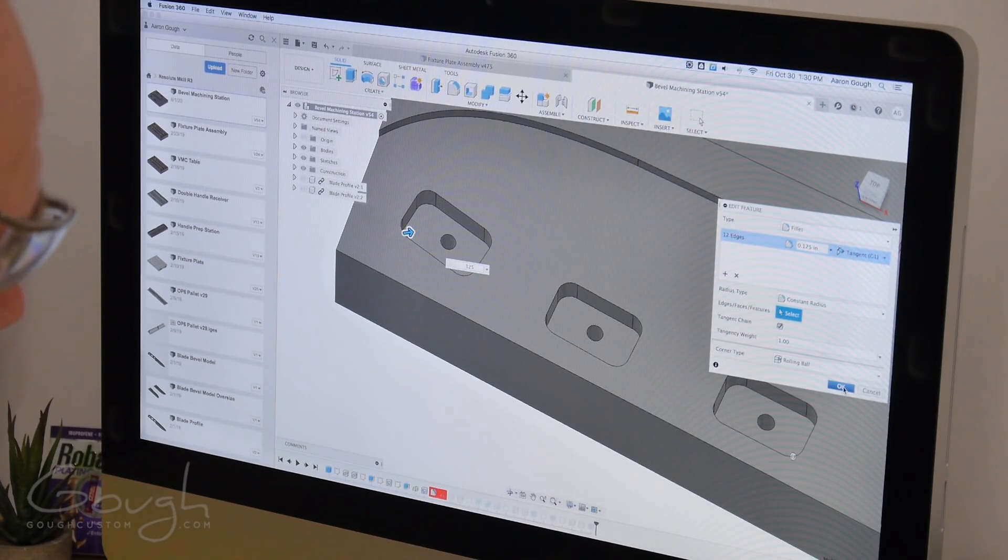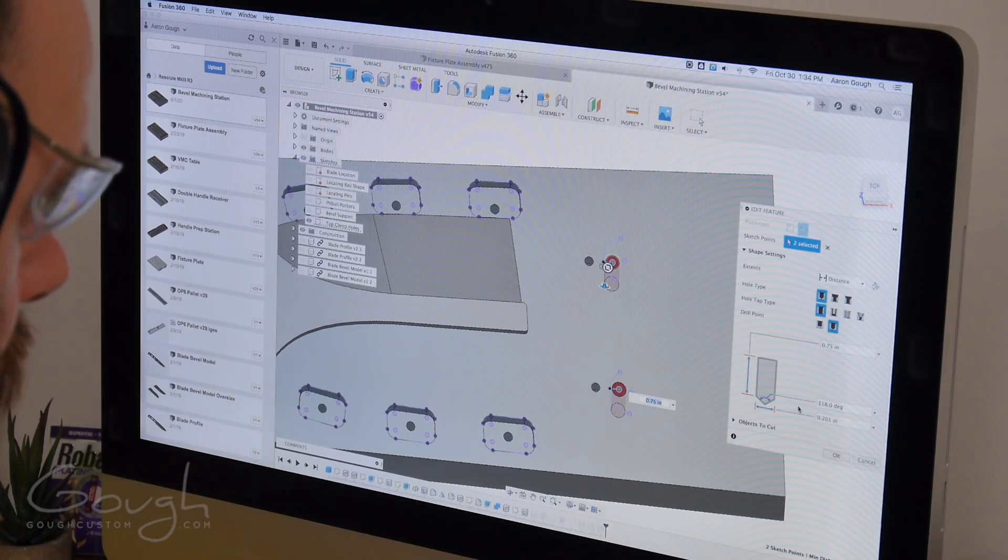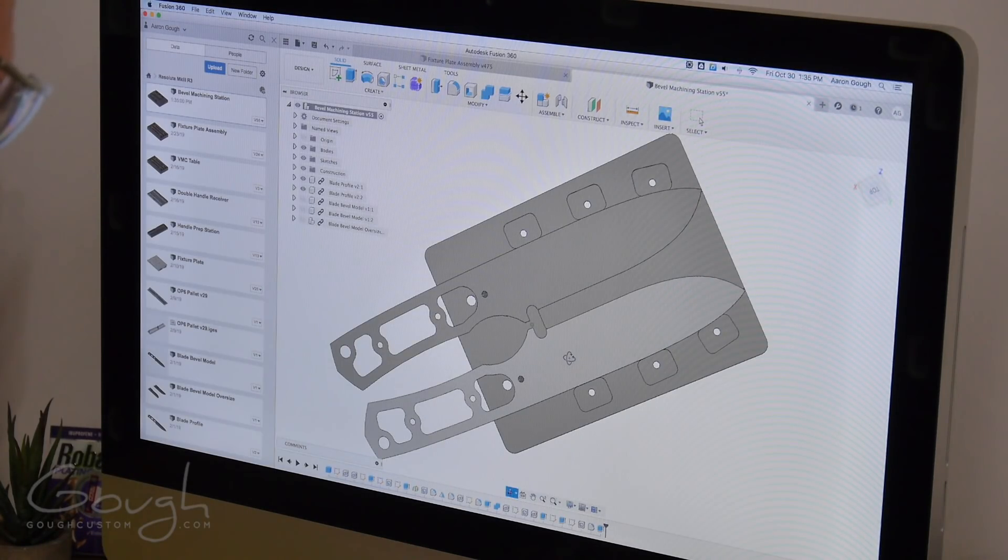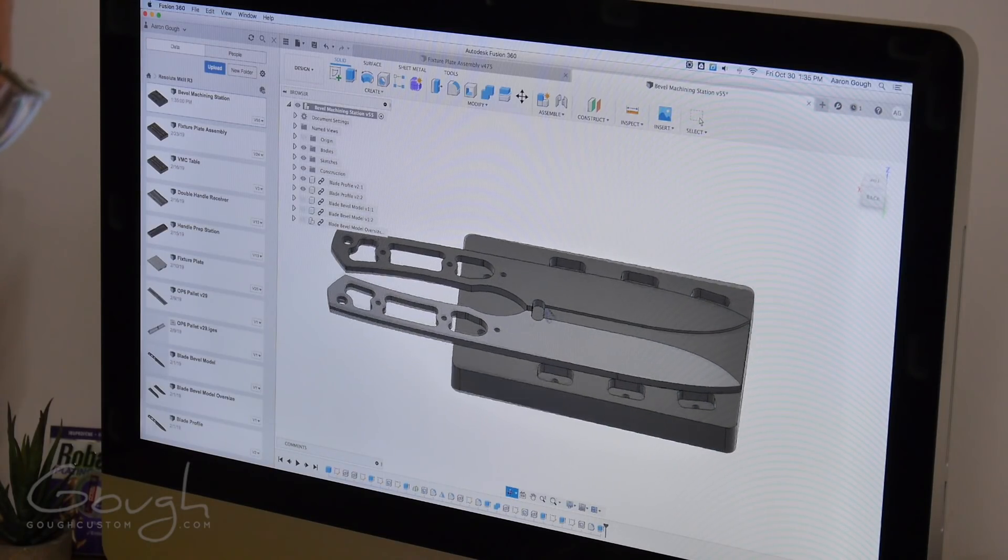Then I want to move the bolt hole locations that allow me to bolt down the blade blanks. Moving these just a little bit closer to the blanks will allow me to bolt them down without making any special washers or adapters.